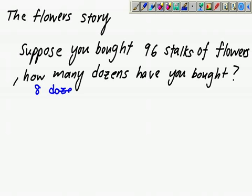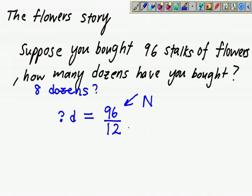So how many dozens? I put question mark dozens. It's the same as 96 over 12. So aren't you using actual amount over the standard number?